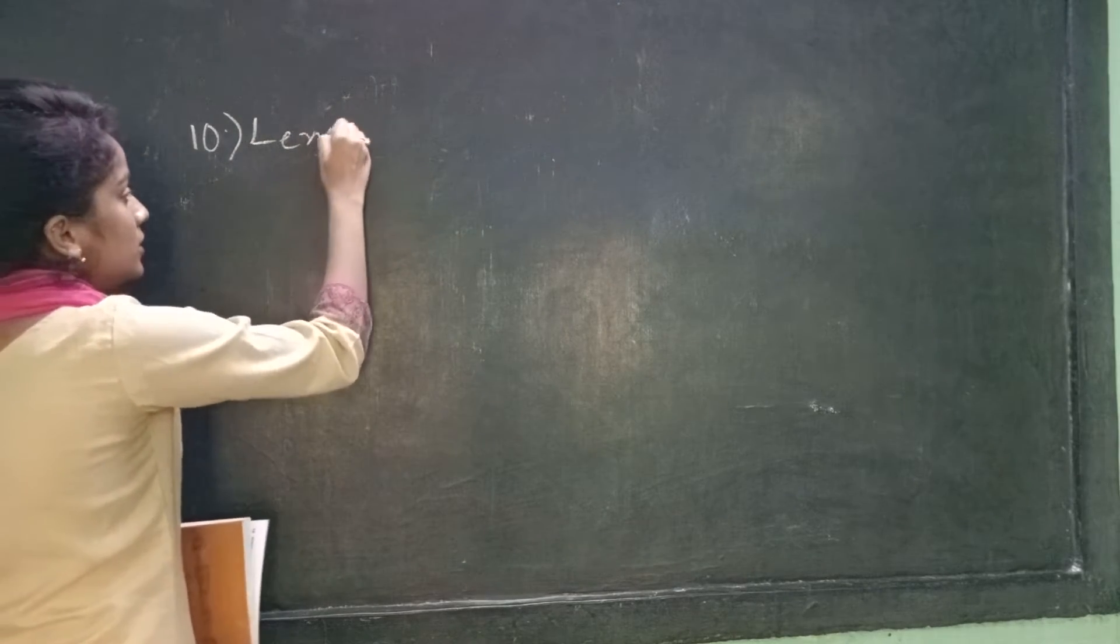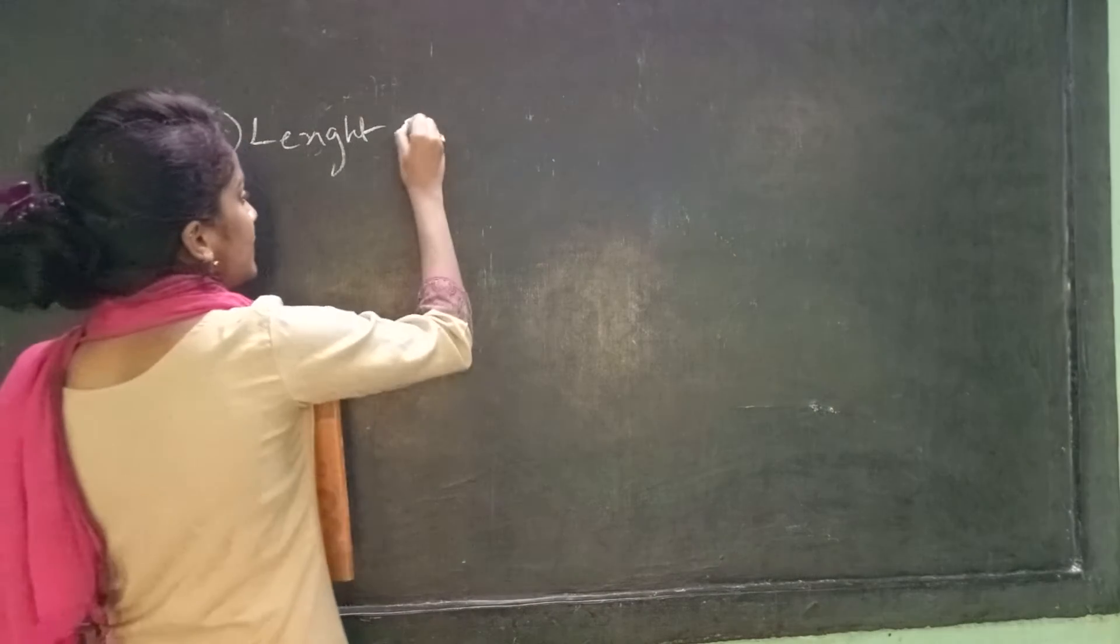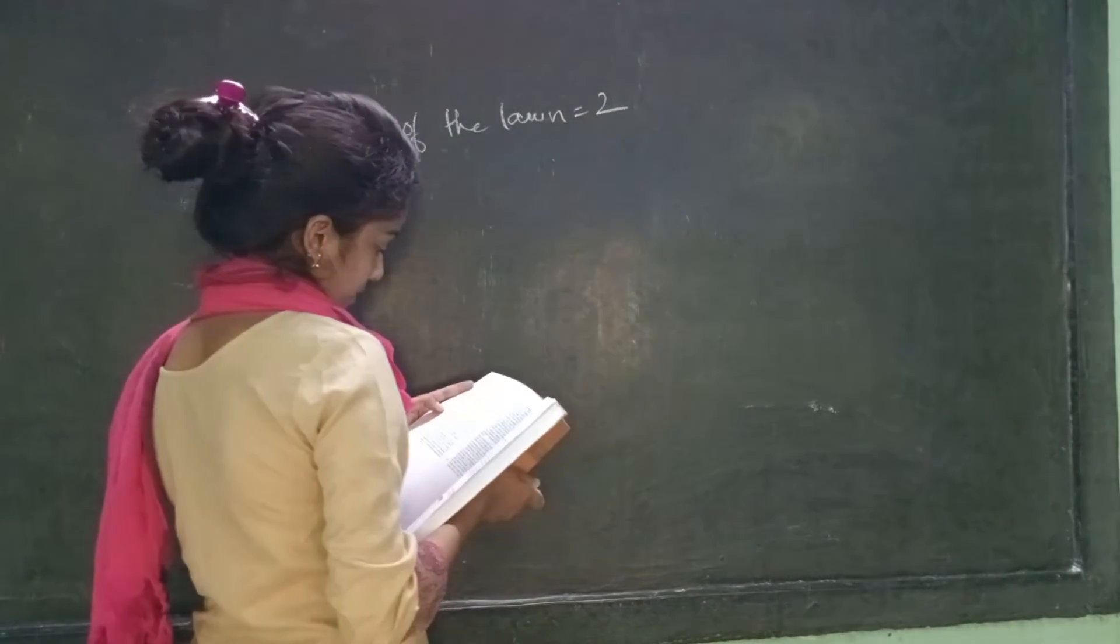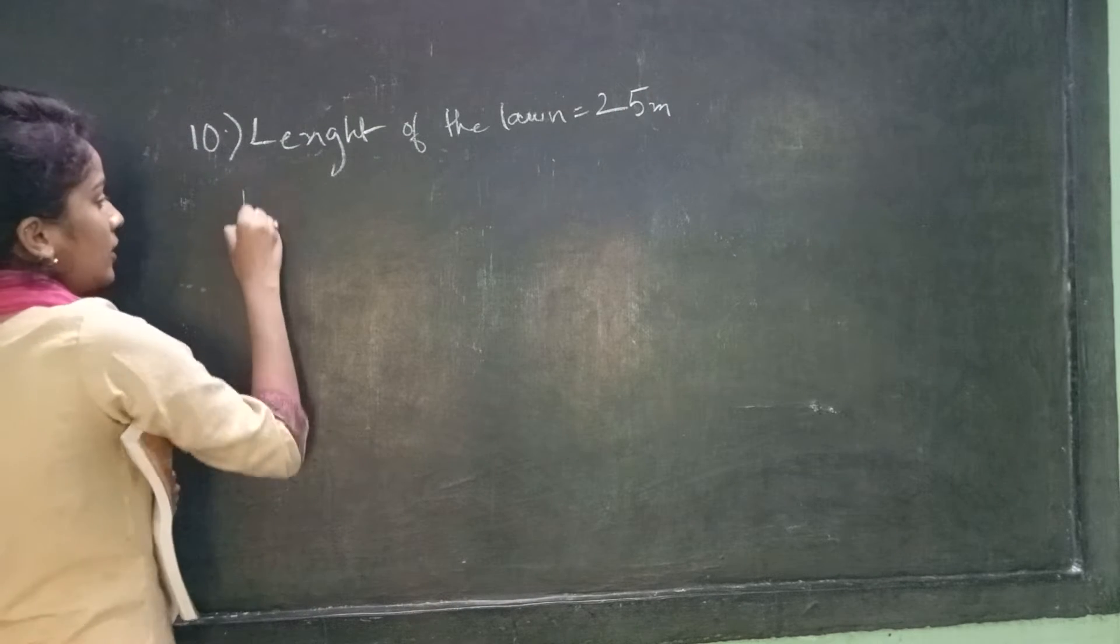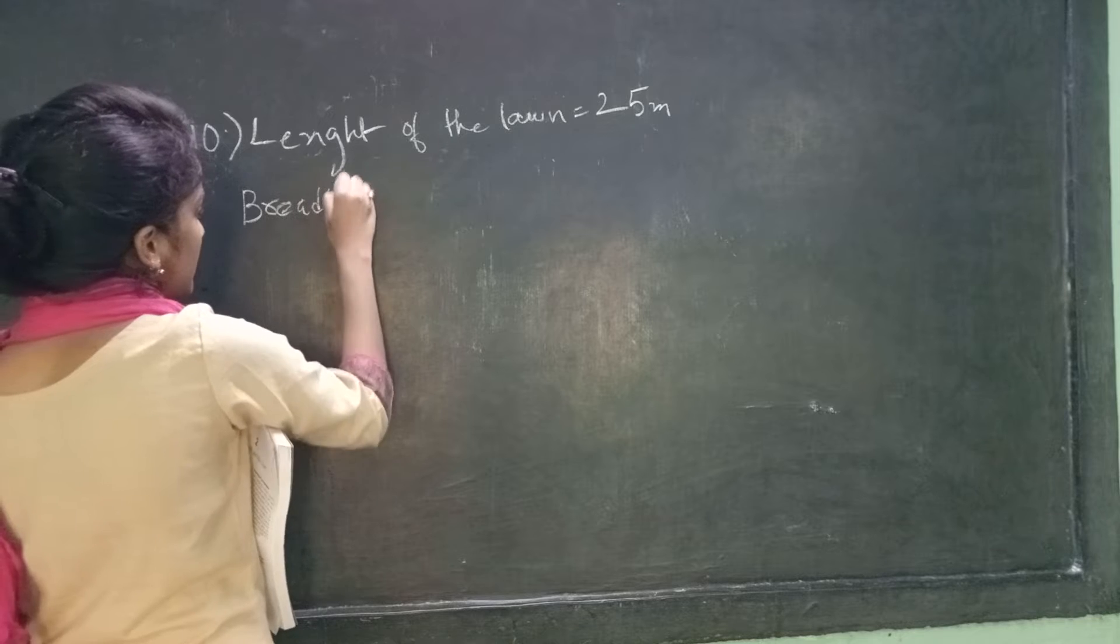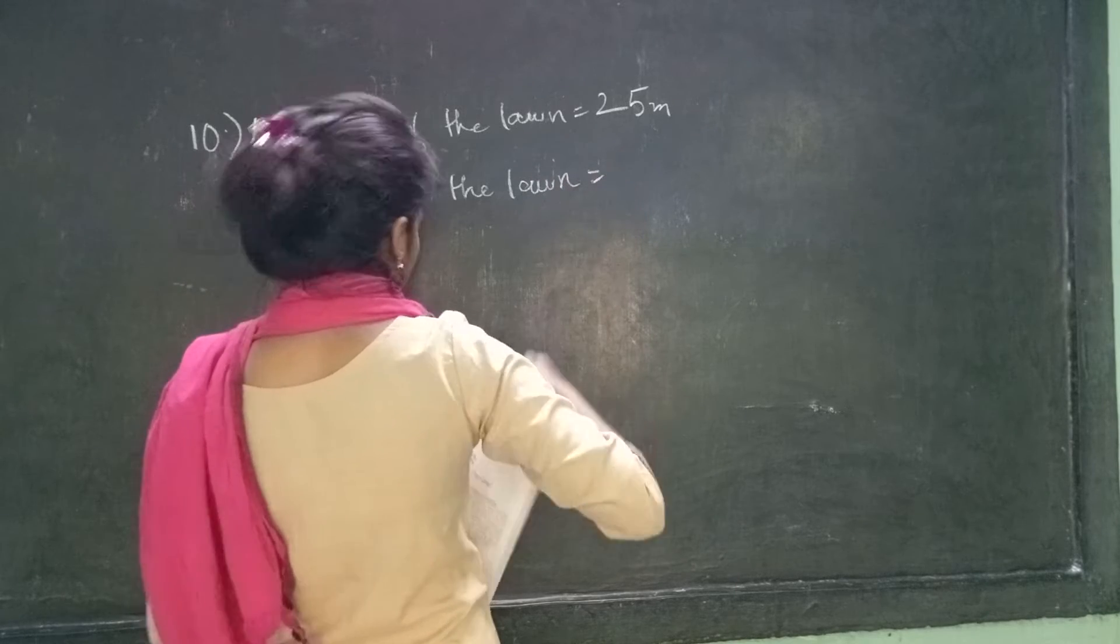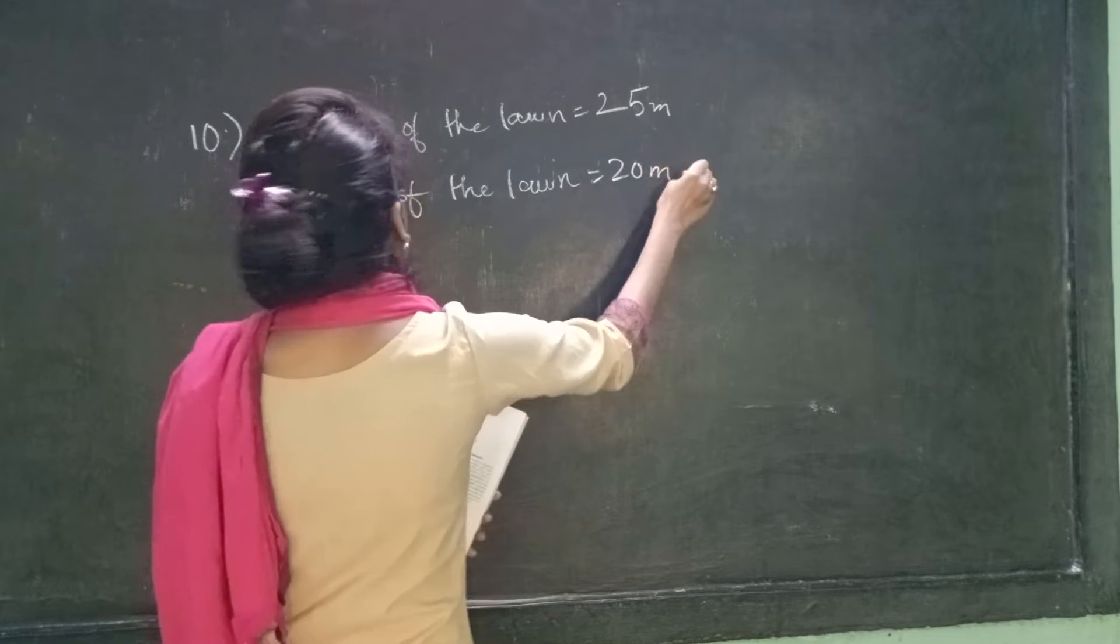So what is the length of the lawn? The length of the lawn is given as 25 meter. Length of the lawn is 25 meter. Then breadth of the lawn. Breadth of the lawn is equals to how much? 20 meter.